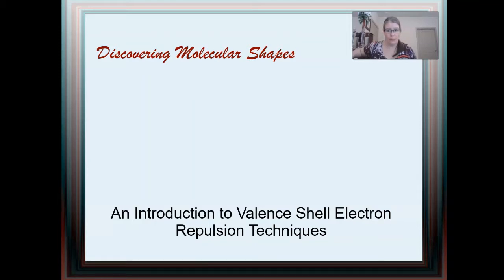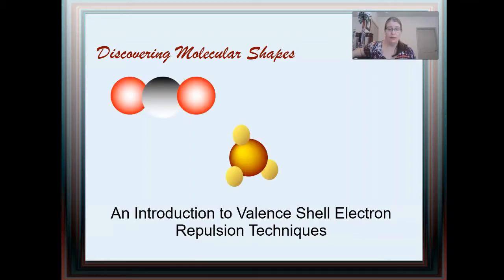We'll modify that later as we look at molecular geometry, which is when we consider whether that area is a bond or a lone pair, and we look at the shape of the molecule overall. In electron geometries, we're just determining how many areas of electrons so we can find the base shape. This all has to do with valence shell electron pair repulsion theory, or VSEPR theory. That's where we get these different shapes of molecules.